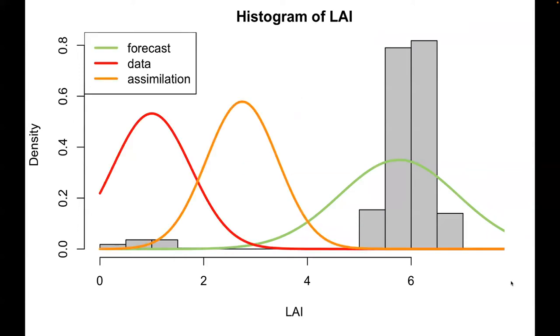Data simulation next uses Bayes' theorem to combine the forecast prior in green with the likelihood of the data in red, giving the assimilation posterior in orange. While the simulation does nudge the forecast towards the data, it ends up stranded in the middle, not representing either mode well.